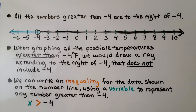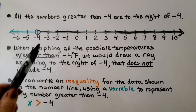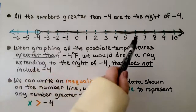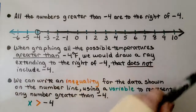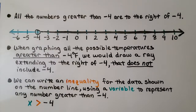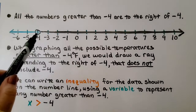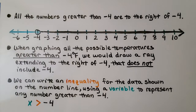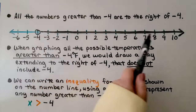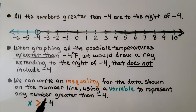All the numbers greater than negative four are to the right of negative four. When graphing all possible temperatures greater than negative four degrees Fahrenheit, we draw a ray — an arrow going in one direction, extending to the right of negative four, that does not include negative four. That's why there's an open circle here. We can write the inequality x > -4, where x represents any number greater than negative four.